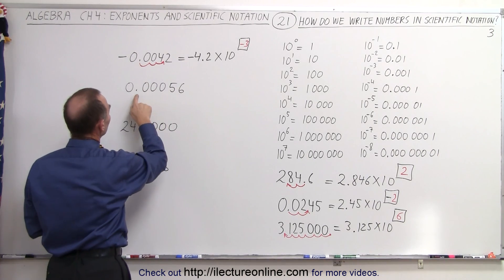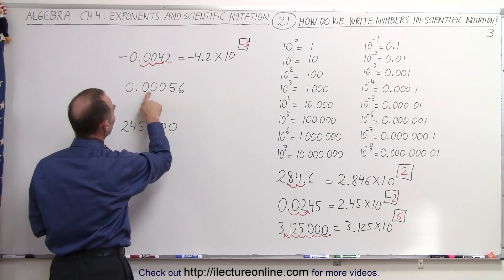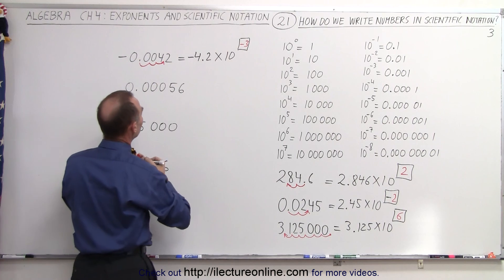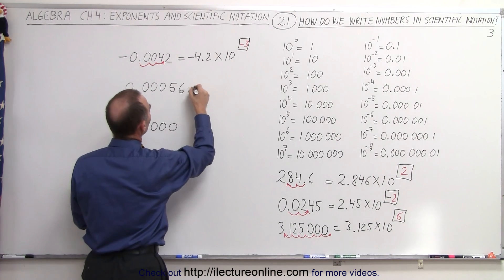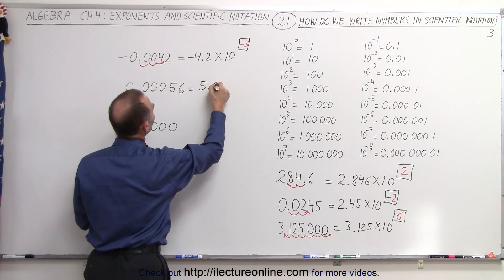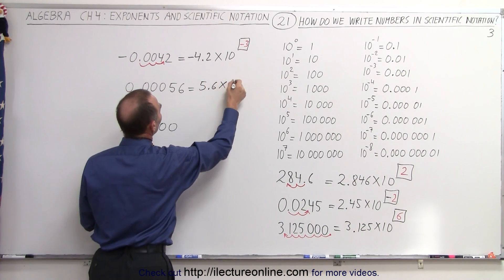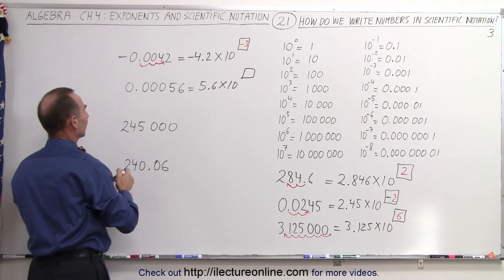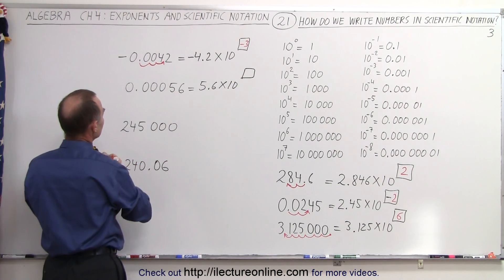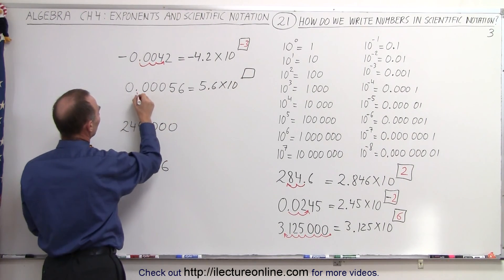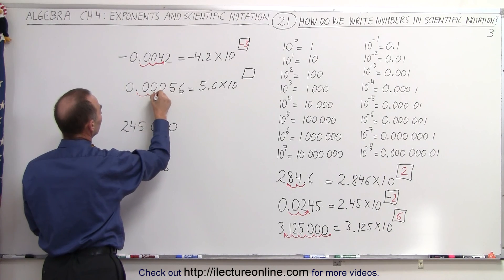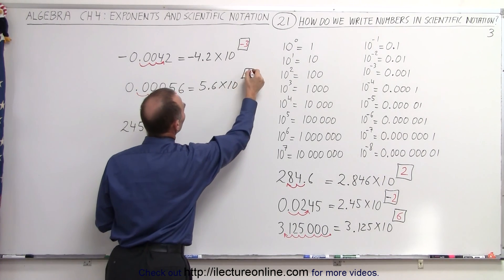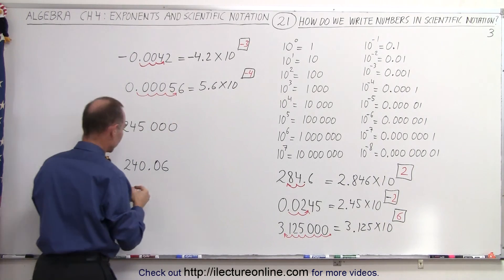On the next one, here we have to move 1, 2, 3, 4 spots. So this is going to be written as 5.6 times 10 to some exponent. And if we count carefully, we have 1, 2, 3, 4 spots. So this becomes times 10 to the minus 4 because we have to move to the right.